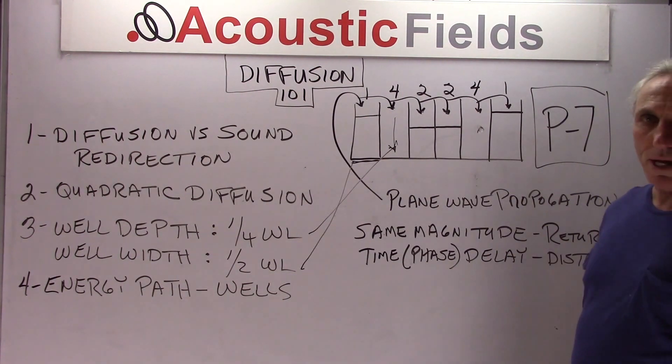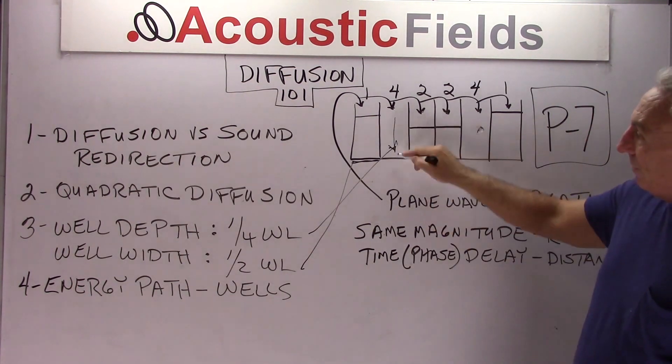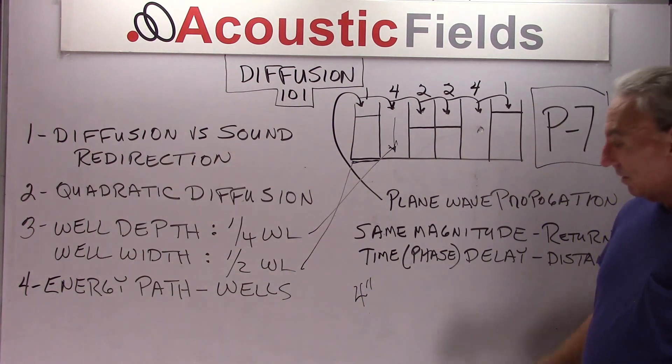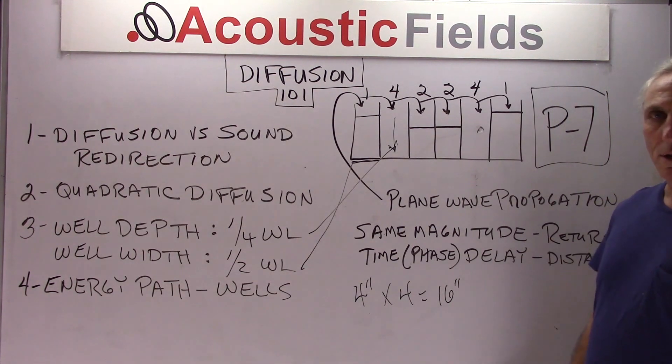Well, we can do a little calculating. We can know that this is based on one quarter wavelength, the depth. So if it's four inches, then we know times four is going to give us 16 inches. Okay, about a foot, foot and a quarter. We take the speed of sound...